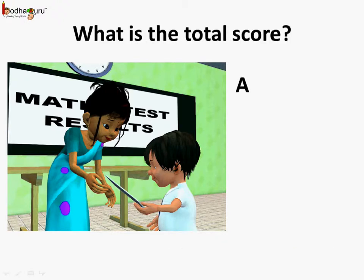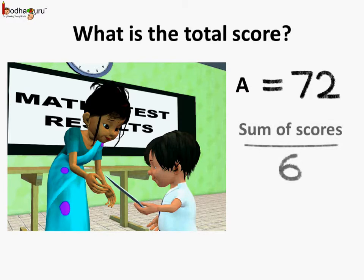We know average is equal to 72 here and the number of subjects he attempted was 6. So average equals sum of the scores divided by 6, and the sum of scores would be 72 multiplied by 6.